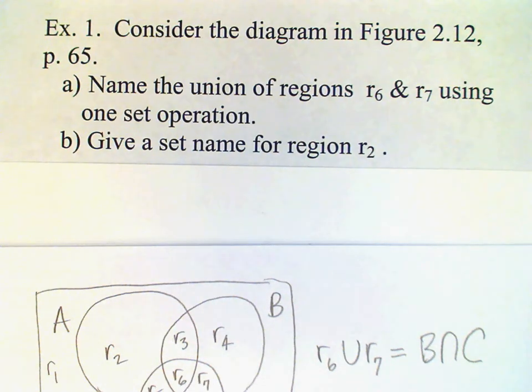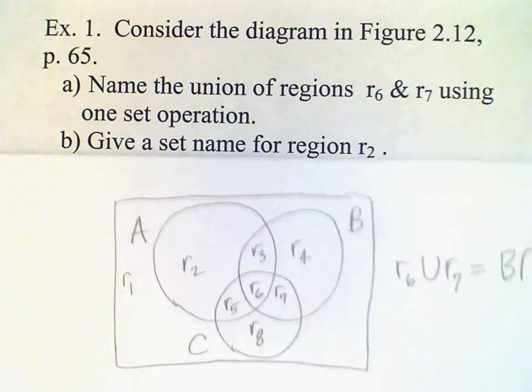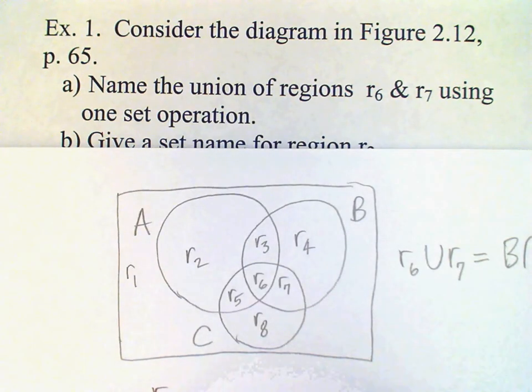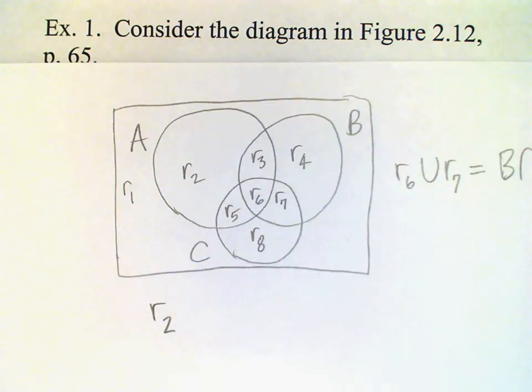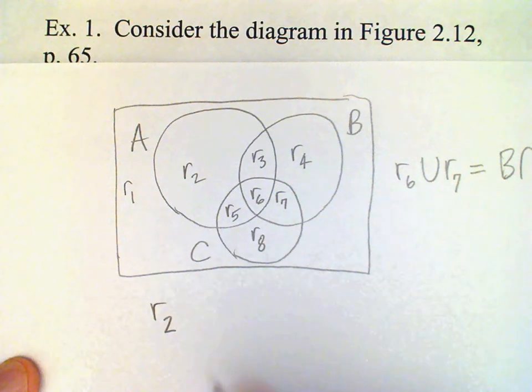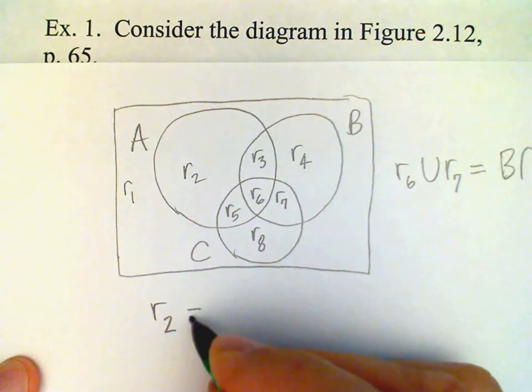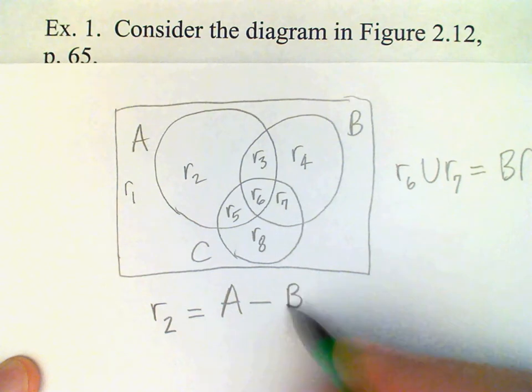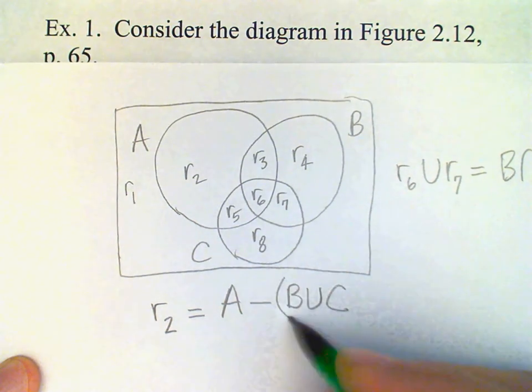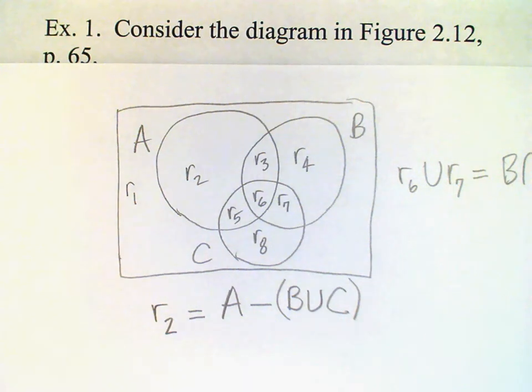Now part B of this example asks us to give a set name for region R2. So R2 is that part of A which is not in B or in C. And so probably the easiest way to specify that is with a set difference: A minus B union C. That part of A which is not in B and not in C.